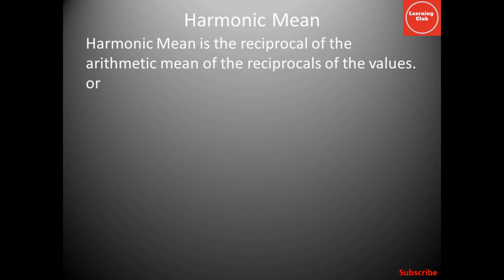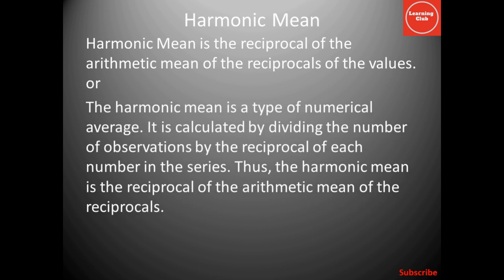In other words, you can say that the harmonic mean is the type of numerical average. It is calculated by dividing the number of observations by the reciprocal of each number in the series. Thus, the harmonic mean is the reciprocal of arithmetic mean of the reciprocal.